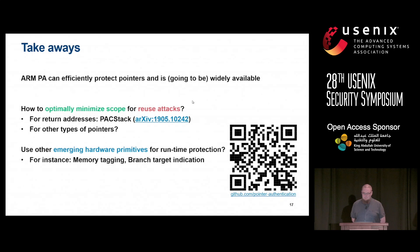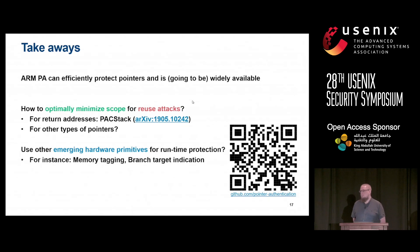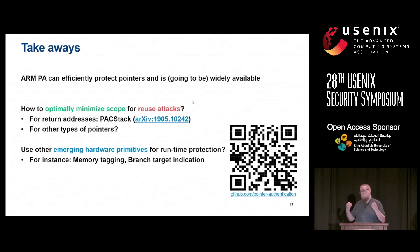Another question: the approach essentially uses a message authentication code as a type tag — have you considered other type systems to apply this to, such as object-sensitive or context-sensitive type systems? The speaker agreed that's a good direction to think about. They did explore other ways to use this mechanism, and the current approach seemed the most compatible choice without causing too many weird corner cases.